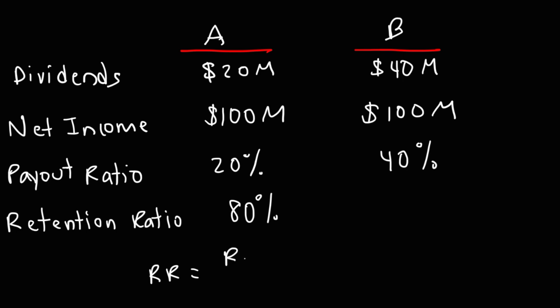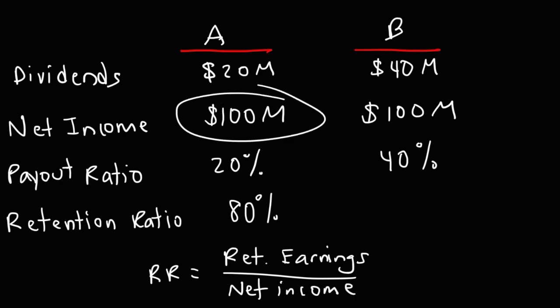It's the amount of earnings that are retained divided by the net income. So, let's think about this. The company has 100 million in earnings. 20 million was passed to the shareholders, which means 80 million was retained. So, if you take 80 million divided by 100 million, multiply that by 100%, that gives you a retention ratio of 80%.